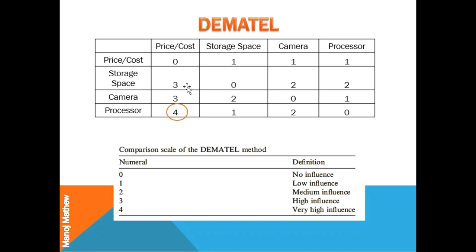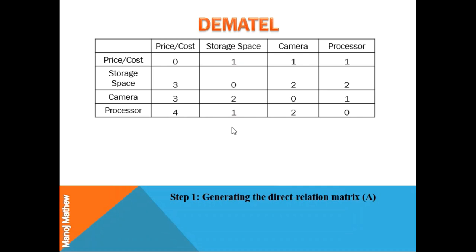Similarly, if you look at the influence of processor over the price, the price of the mobile phone is very highly dependent on the type of processor used. So we can assign a value of 4 in this cell. Similarly, you can assign other values to get the direct relation matrix.